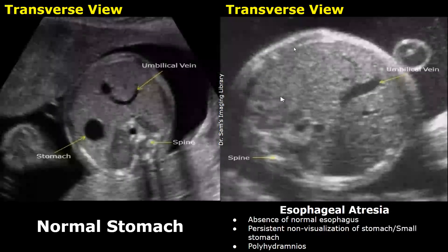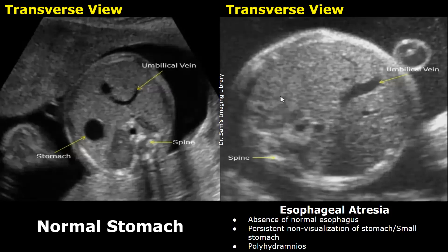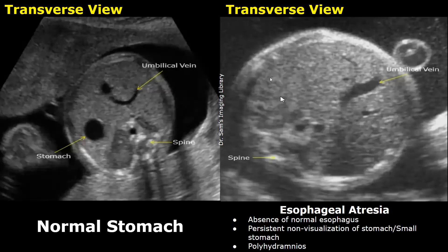In esophageal atresia there is absence of a normal esophagus. On ultrasound there will be persistent non-visualization of the stomach, or a small stomach is seen with associated polyhydramnios — which is an abnormally increased amount of amniotic fluid. Normally the stomach appears as a rounded anechoic structure, but in this image we do not see the stomach. The constant non-visualization of the stomach with polyhydramnios is a sign of esophageal atresia.